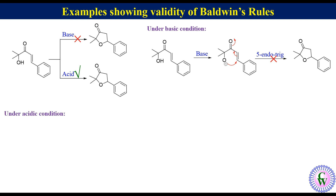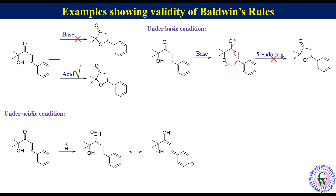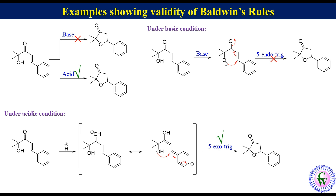Under acidic conditions, the substrate undergoes protonation on the ketonic oxygen to produce an oxonium ion, one of the resonating structures of which activates the electrophilic carbon. This can then undergo 5-exotrig cyclization to produce the cyclic structure. According to Baldwin's Rule, 5-exotrig cyclization is favored, so this cyclization happens under acidic conditions.